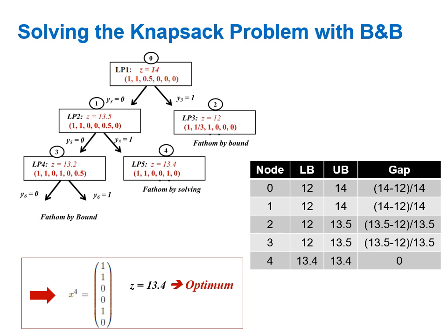The gap is calculated as upper bound minus lower bound divided by upper bound, multiplied by 100 for a percentage gap. At node one (y3=0, LP2 value 13.5): best integer solution is 12, open nodes have parents with values 13.5 and 14, so the upper bound remains 14 and the gap is the same. At node two (y3=1, LP3 value 12): fathomed by bound, lower bound still 12, upper bound updates.